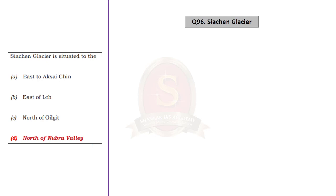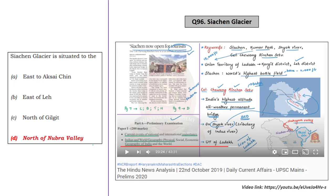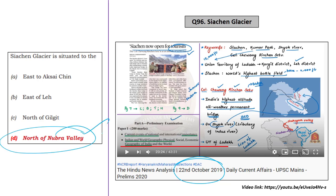Question 96 in Set A is based on Siachen Glacier. We discussed Siachen Glacier very elaborately on 22nd October 2019 in the Hindi News Analysis. During the analysis, we explained important locations like Saksikam Valley, Nubra Valley, and Aksai Chin. From this, you can easily answer that the correct answer is Option D — north of Nubra Valley. Siachen Glacier is situated to the north of Nubra Valley.